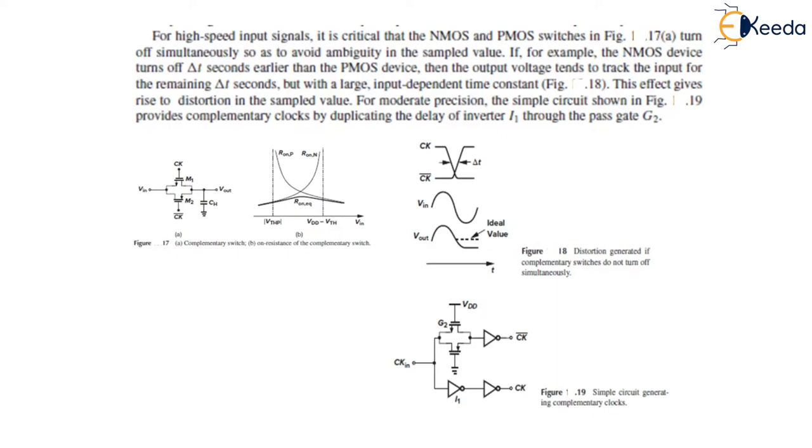If, for example, the NMOS device turns off delta seconds earlier than the PMOS device, then the output voltage tends to track the input for the remaining delta seconds but with a large input-dependent time constant as shown in figure 18. This effect can give rise to distortion in the sampled value.